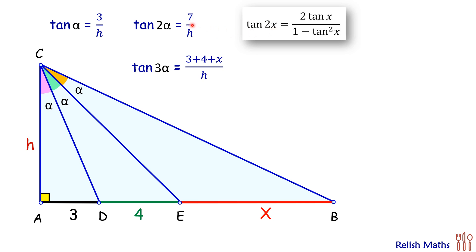So we get 7 by h is 2 times of 3 by h upon 1 minus tan² x, that is 3/h². Simplifying it, we'll get our equation in this form. Solving it we'll get value of h as 3√7 centimeters.